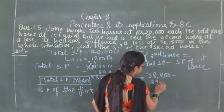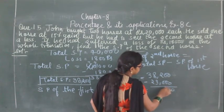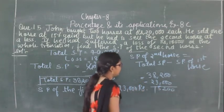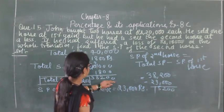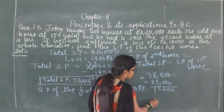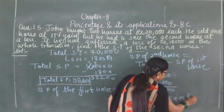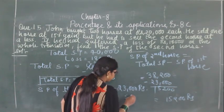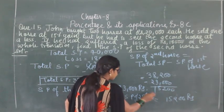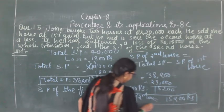So selling price of second horse equals 38,200 minus 23,000, which gives us 15,200 rupees. The selling price of the second horse is ₹15,200.